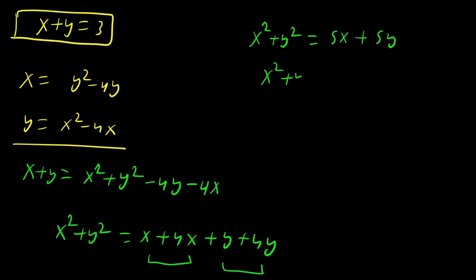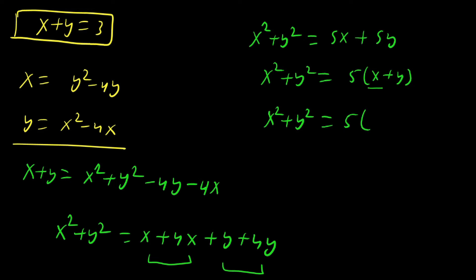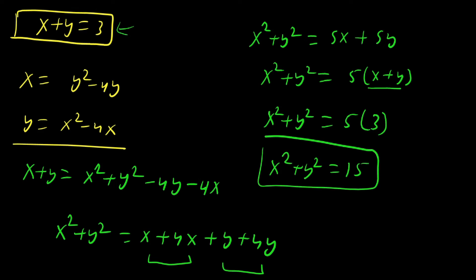Taking 5 as common: x squared plus y squared equals 5 times (x plus y). Substituting x plus y equals 3, we get x squared plus y squared equals 5 times 3, which equals 15. This is our final answer. I hope you enjoyed this video. See you in the next video — till then, take care and bye.